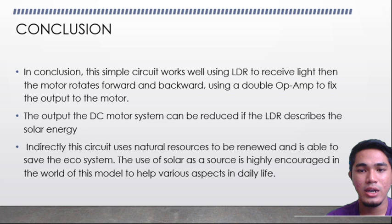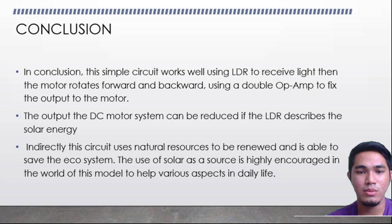For the conclusion, this simple circuit works well using LDR to receive light, causing the motor to rotate forward, and reverse when the other LDR is activated. A double op-amp amplifier is used to feed the output to the motor. The DC motor system output can be reduced if the LDR detects solar energy. This circuit uses natural resources to be renewed and is able to save the ecosystem. The use of solar energy is highly encouraged in the modern world to help various aspects of daily life.